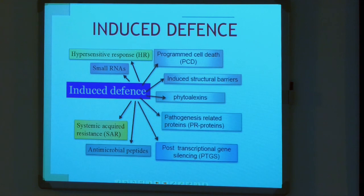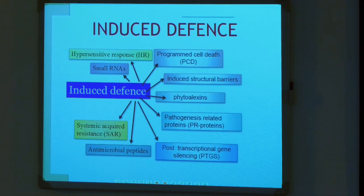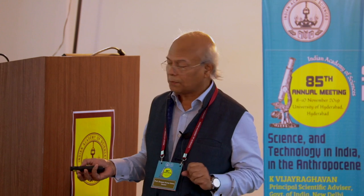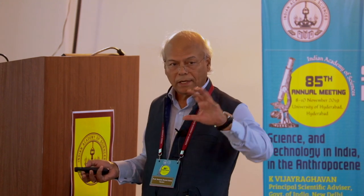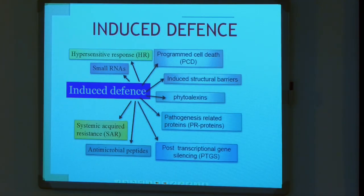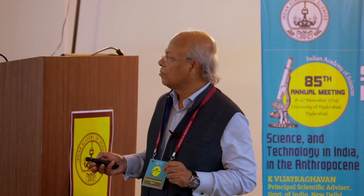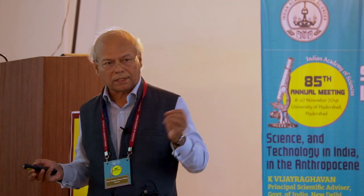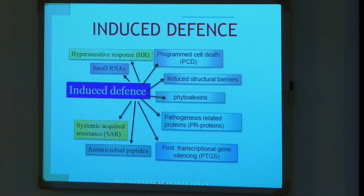Throughout our plant defense system, what we would like to see includes: induced defense, hypersensitive response, small RNA, systemic acquired resistance, antimicrobial peptides — small molecules and peptides present in plants that defend the plant against pathogens. Post-transcriptional gene silencing is a new area coming up. Pathogenesis-related (PR) proteins are the most commonly worked-on components. Phytoalexins — whenever a pathogen attacks, the plant immediately produces phytoalexins to defend itself. Induced structural barriers and programmed cell death are also key mechanisms.